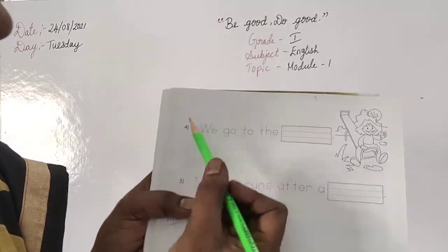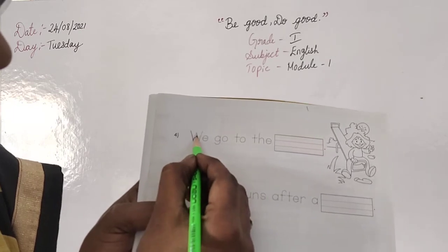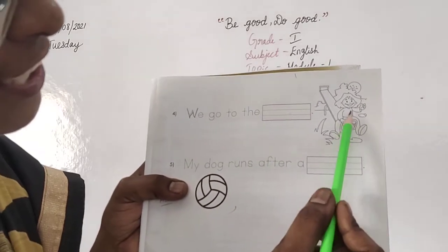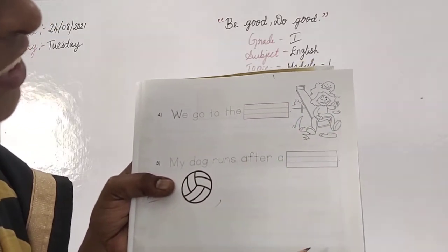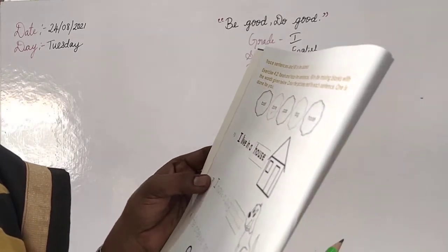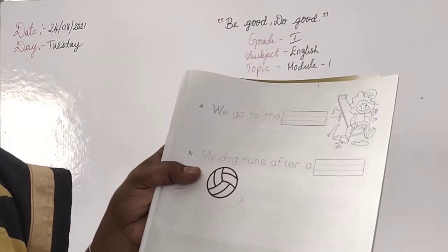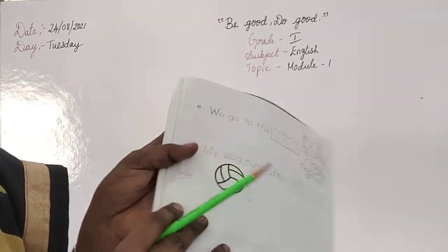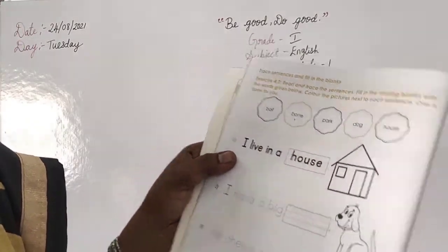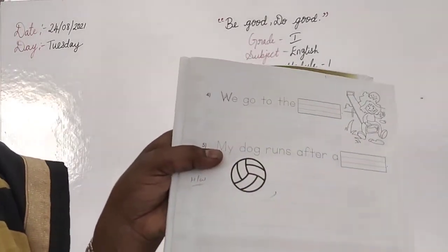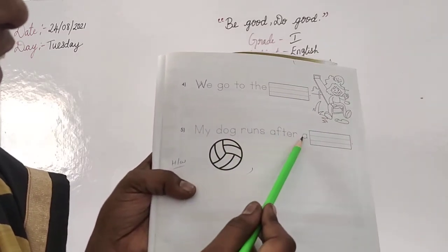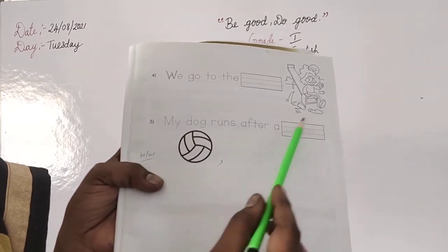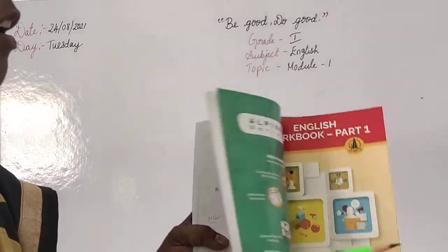Turn the next page — you also need to trace this sentence neatly. Then write the correct answer. The girl is playing in a park — write 'park': P-A-R-K. My dog runs after a ball — write 'ball.' Trace it, then write. This is your homework.